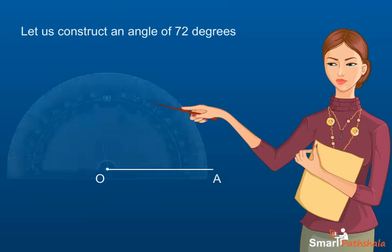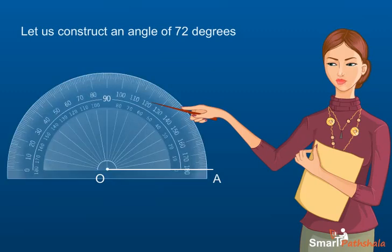Step 2: Keep the protractor along OA such that center point of the protractor is on O. Step 3: See the zero mark that lies on the ray OA. Count 72 degrees from there and mark a point B.